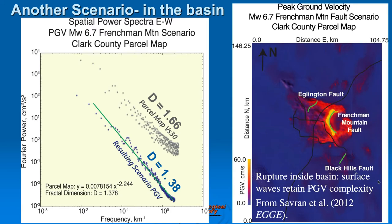Let's look at another scenario, this time for an earthquake within the basin on the Frenchman Mountain fault. Again, we have the same 1.66 fractal dimension from the VS-30 map itself, and now a 1.38 fractal dimension on the resulting scenario PGV. Perhaps when we're rupturing inside the basin, the surface waves — not having to channel into the basin from outside — are retaining more of their complexity.